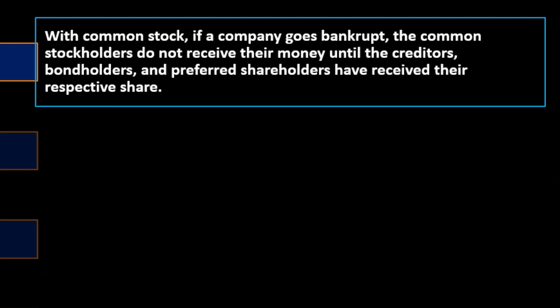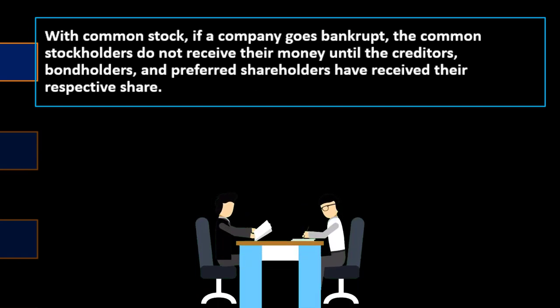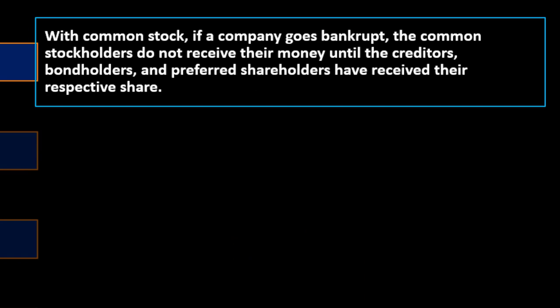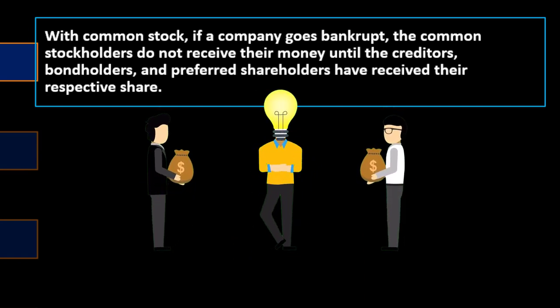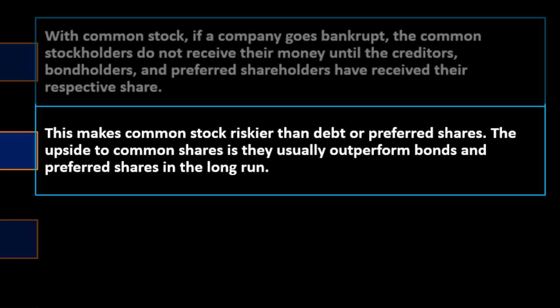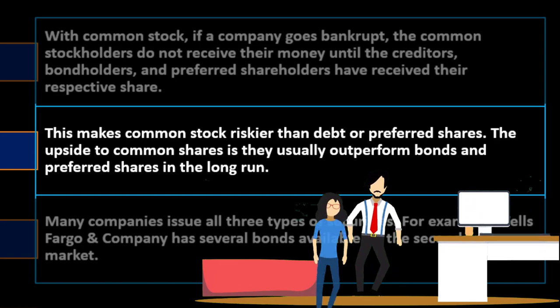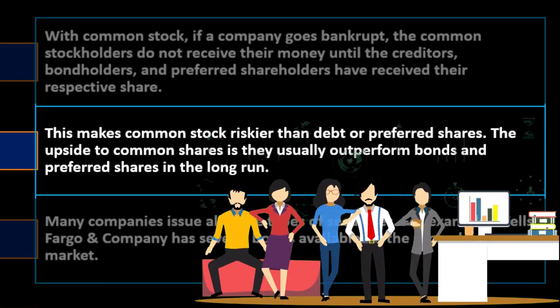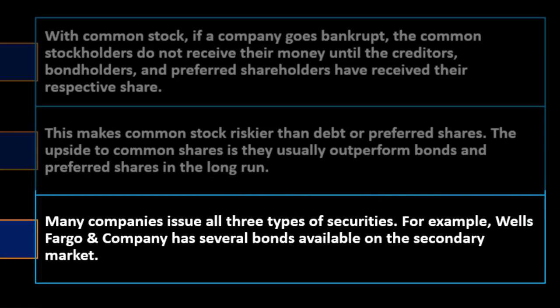Special consideration: corporate bankruptcy. With common stock, if a company goes bankrupt, common stockholders do not receive their money until creditors, bondholders, and preferred shareholders have been paid. Bondholders get paid first and have a more guaranteed amount. As a shareholder, your benefit is that the value goes up and you get more through dividends and stock valuation increases. This makes common stock riskier than debt or preferred shares, but common shares usually outperform bonds and preferred shares in the long run.